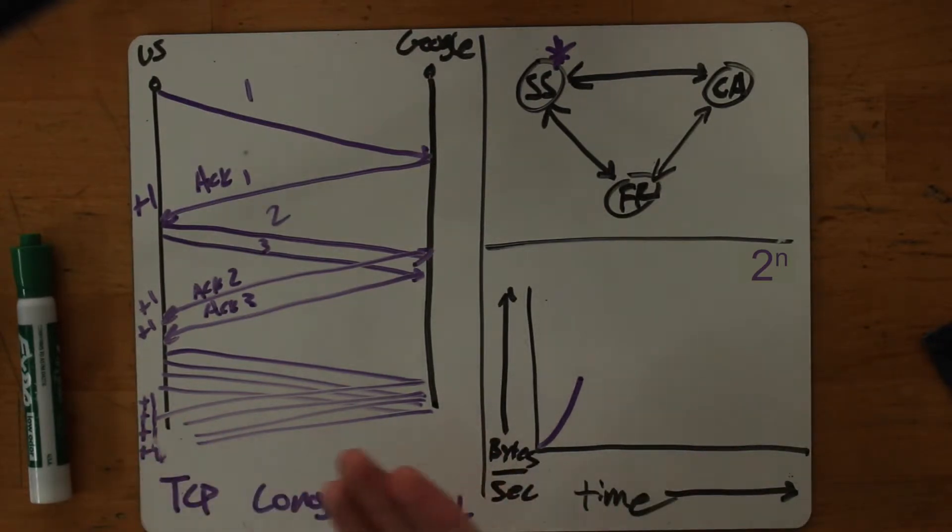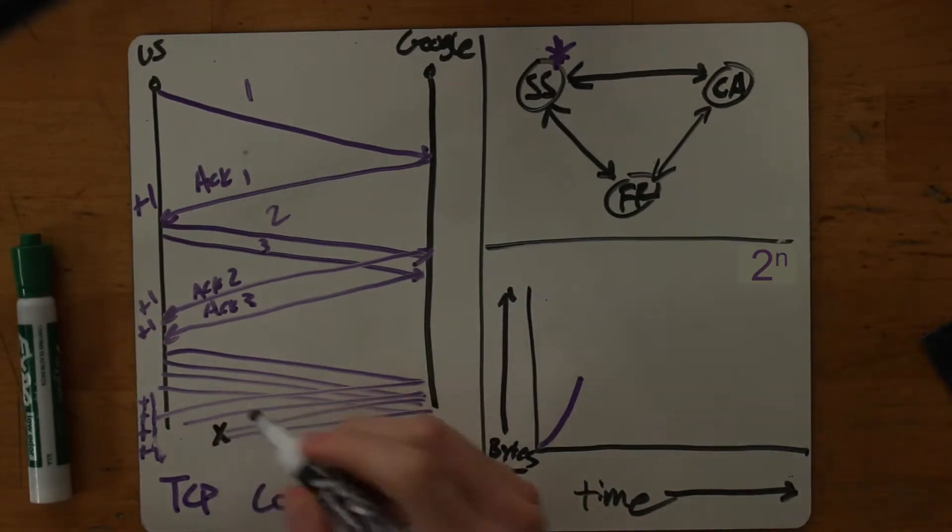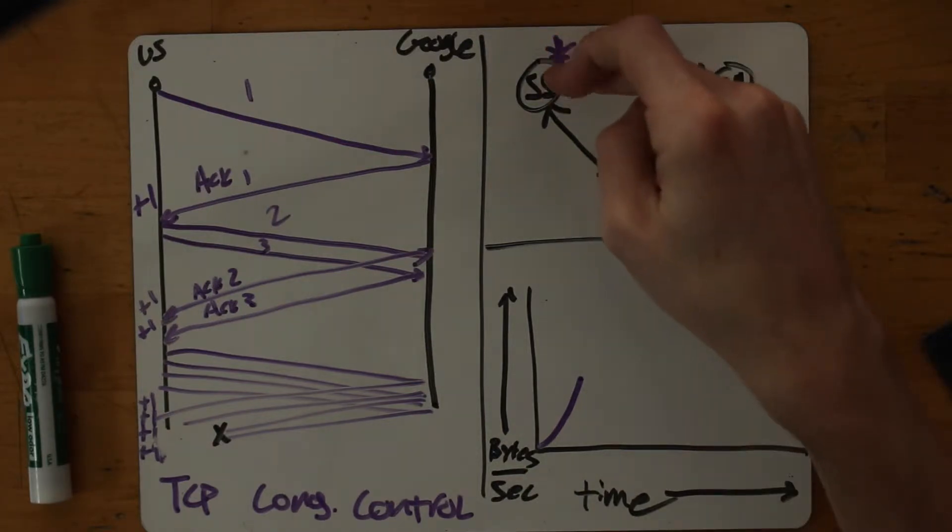The first thing that can happen is a bad thing. Let's say one of these packets gets dropped. And I receive a timeout. I sent a packet, an acknowledgement for it never came back, and I timeout. In that case, I restart slow start.